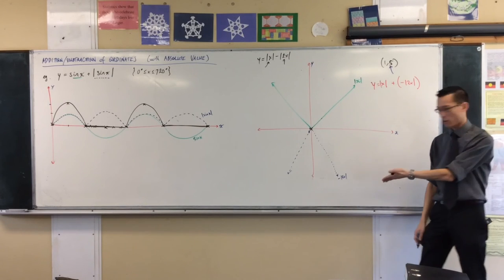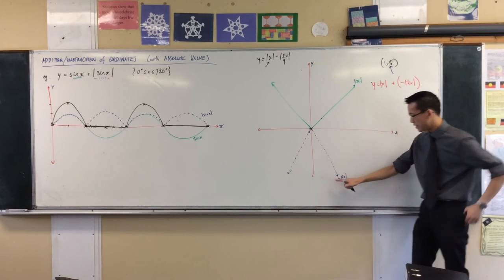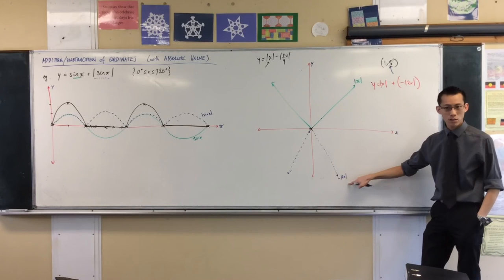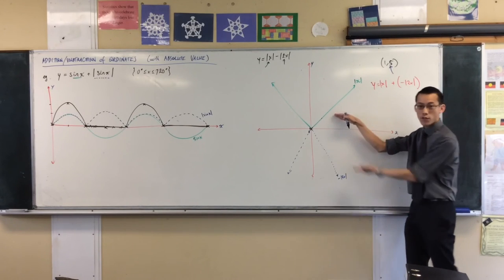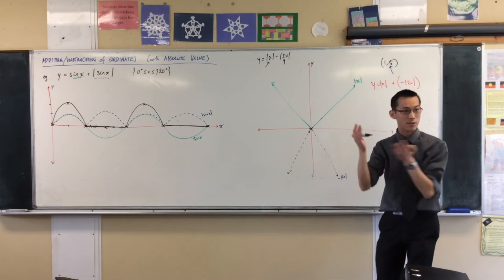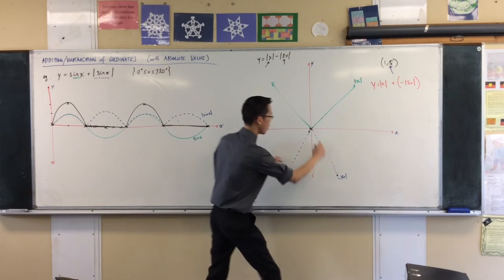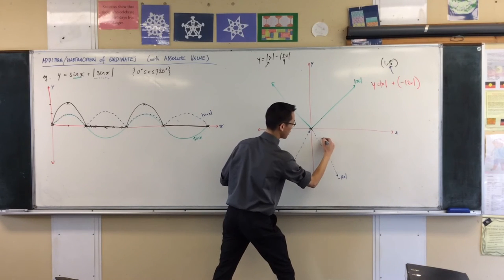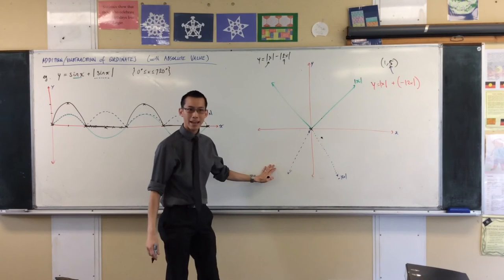Now, the ordinate that corresponds to that down here is going to be negative absolute value of 2, which is negative 2. So you've got 1, you've got negative 2, you add them together, and that gives you negative 1. So there you go. There's one ordinate, there's the other sum, looking like something over here.